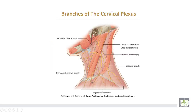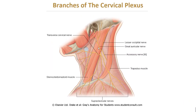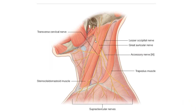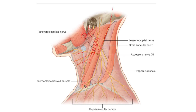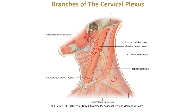The diagram shows the branches of the cervical plexus, which lies deep to the sternomastoid muscle. The lesser occipital supplies the scalp; the great auricular goes to the angle of the mandible; the transverse cervical supplies the front of the neck; and the supraclavicular is divided into anterior, posterior, and intermediate branches.